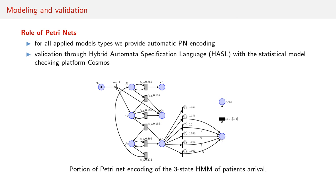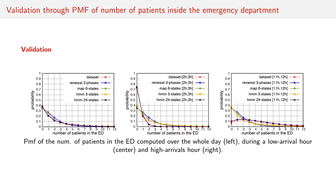For all applied models, we provide automatic PATRINET encoding and validated them through hybrid automata specification language with the tool COSMOS, which is based on PATRINETs. We validated all derived models by calculating the distribution of the number of patients inside the emergency department.